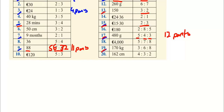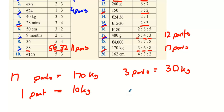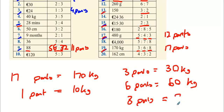Question 19: add three, six, and eight together to get 17 parts. So 17 parts equals 170 kilograms, which implies one part equals 10 kilograms. Three parts: three times 10 is 30 kilograms. Six parts: six times 10 is 60 kilograms. Eight parts: eight times 10 is 80 kilograms.